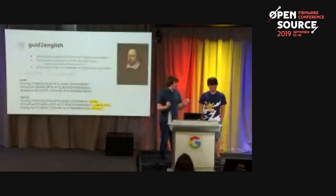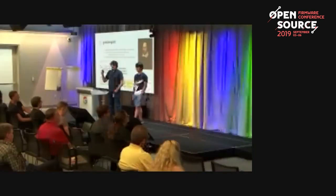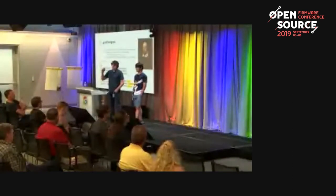Fiano is actually a set of multiple tools. UTK is one of them. Another is GUID-to-English, which finds all GUIDs in a file — usually a log — and appends a human-readable English representation of each GUID. It works on stdin and stdout, so you can pipe your minicom or serial output through GUID-to-English to get readable names, since no one can remember GUIDs themselves. We built the GUID map in Go with about a thousand GUIDs sourced from EDK2 build files.